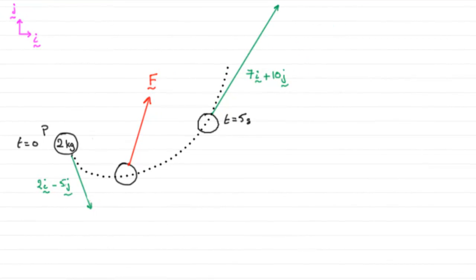Now, this last part of the question, we've got to find the value of t when the particle P is moving parallel to the vector i, moving to the left.